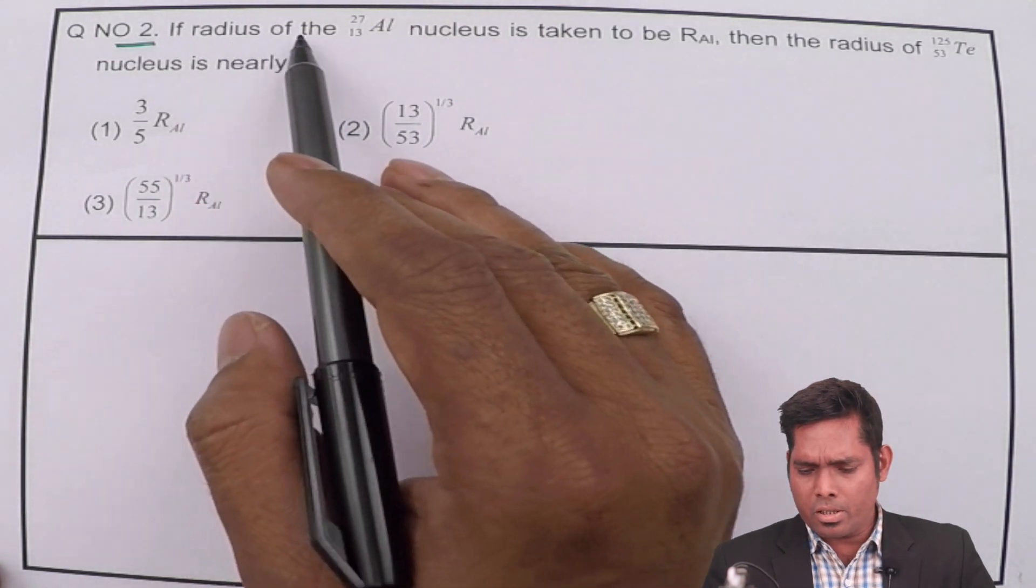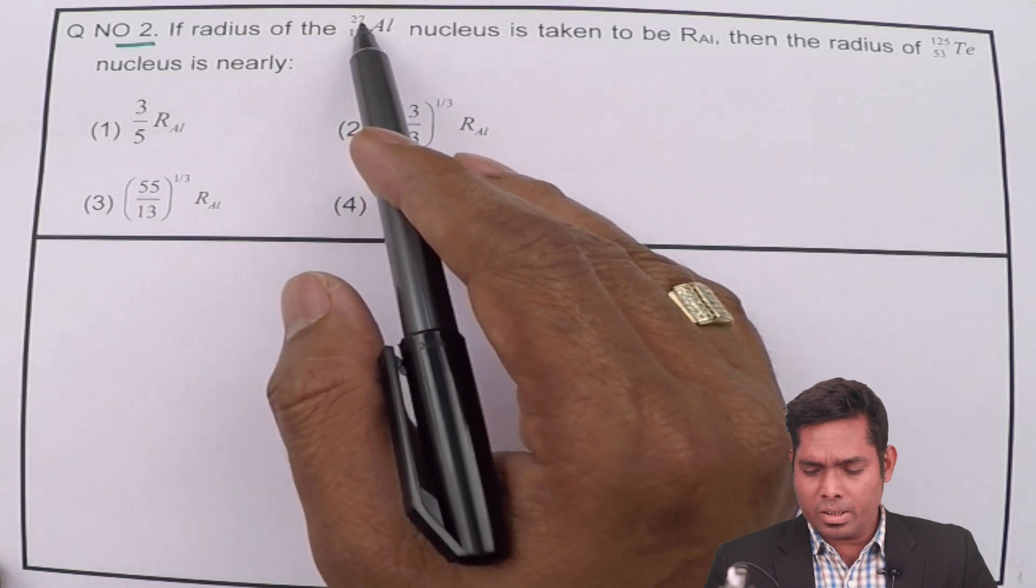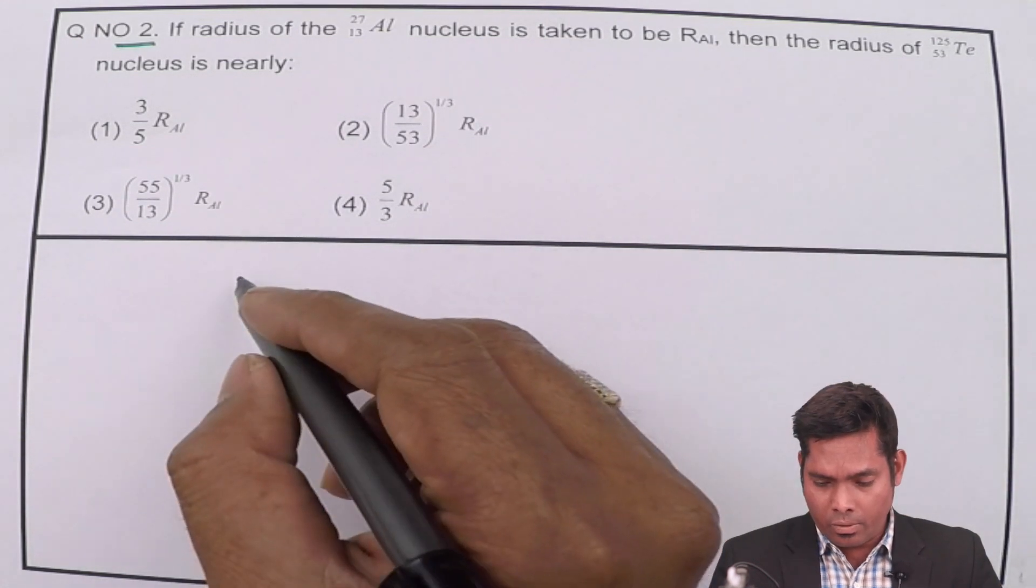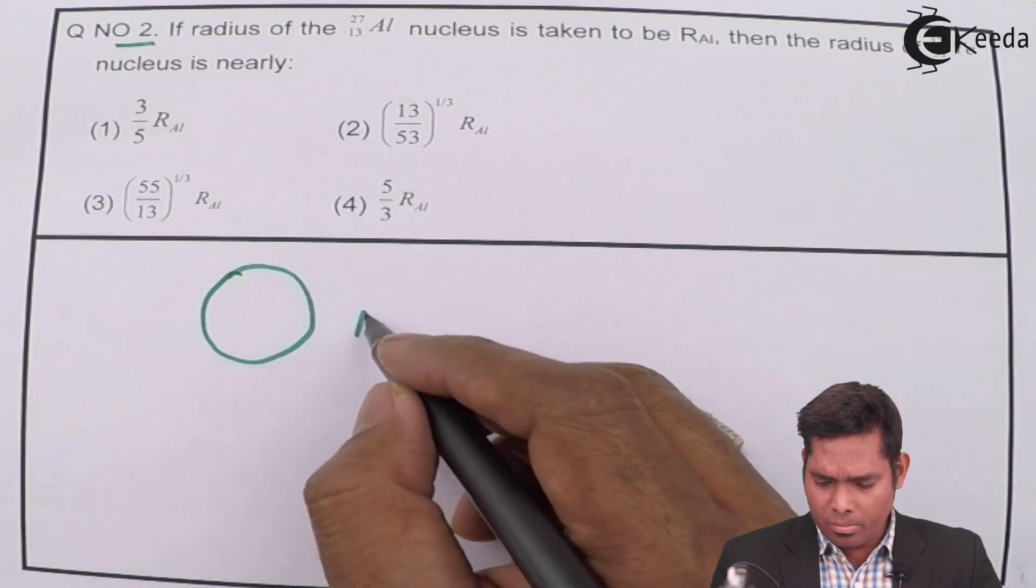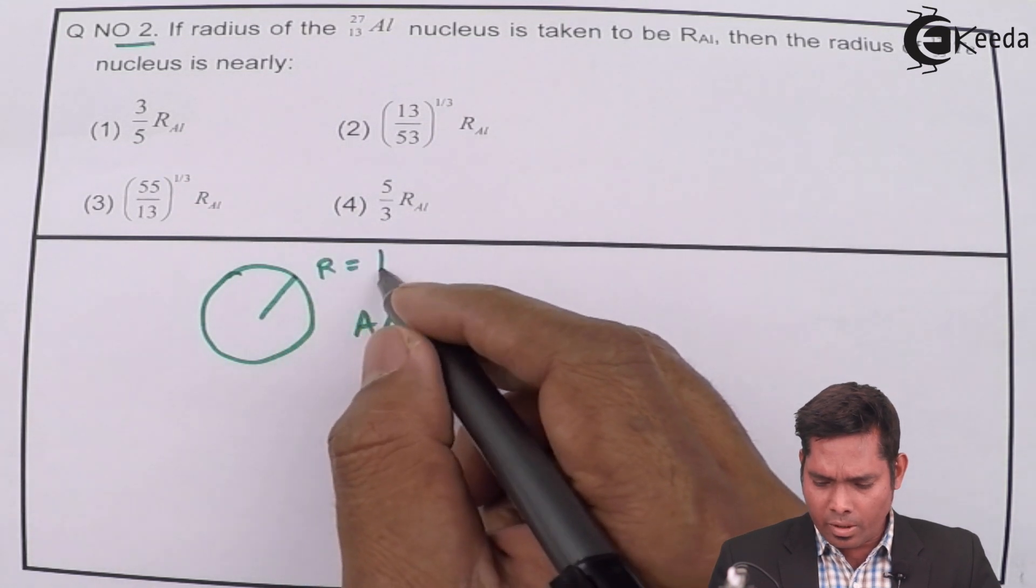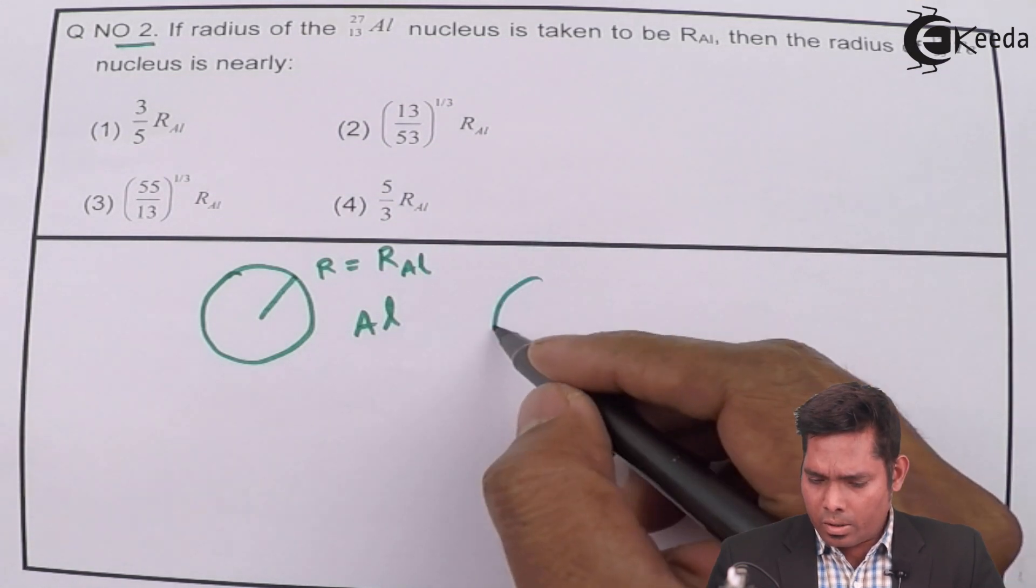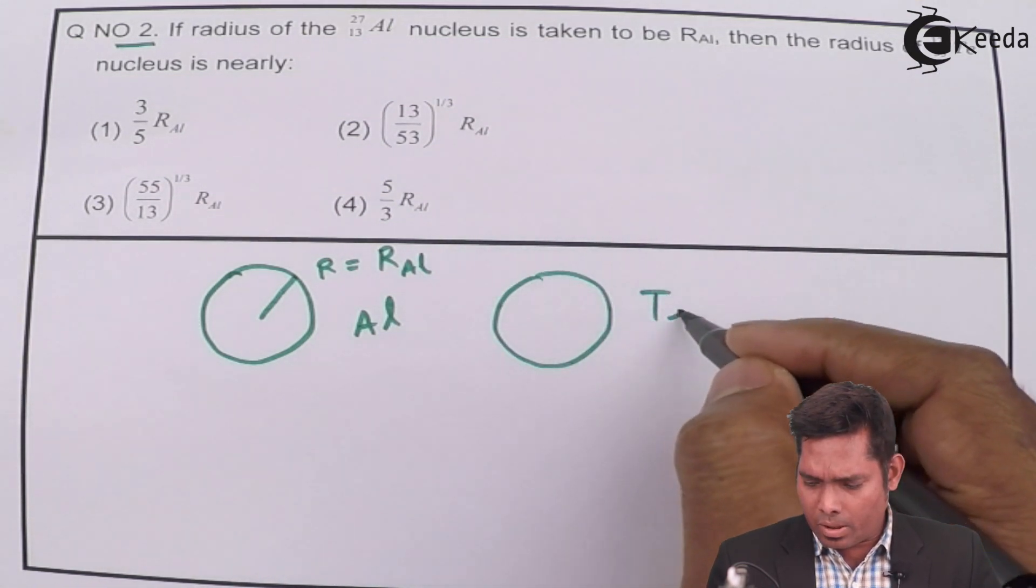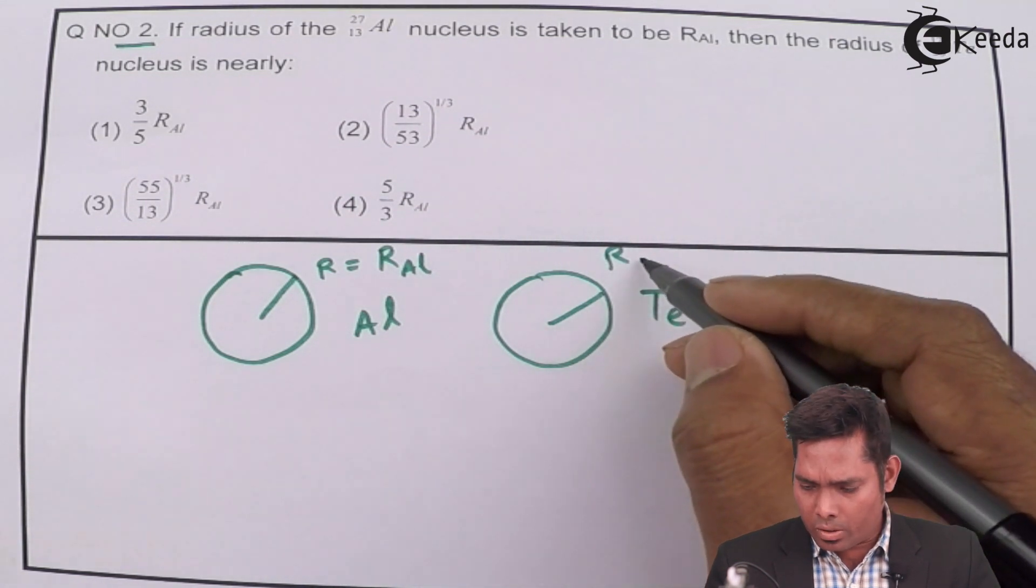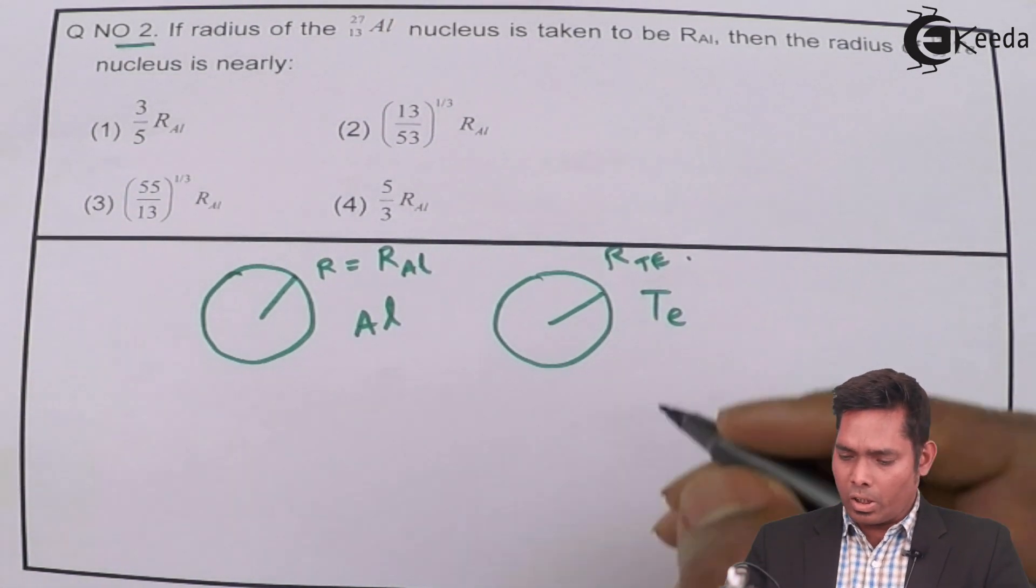If the radius of aluminum nucleus, aluminum is 13, 27, is taken to be R_AL. If you have aluminum nucleus, which radius is written as R_AL, then the radius of tellurium is how much? Which is the radius of Te? That is the question. R_Te.